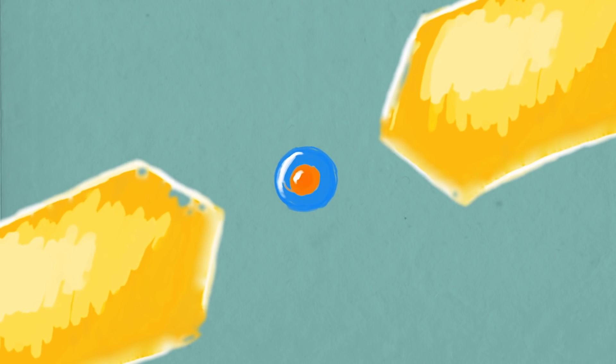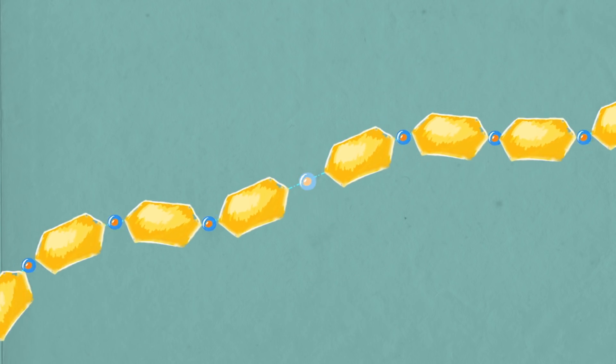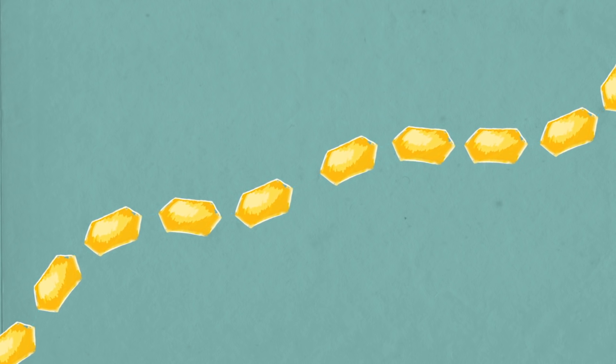In starches, which plants mostly store for energy in roots and seeds, glucose molecules are joined together by alpha linkages, most of which can be easily cleaved by enzymes in your digestive tract.